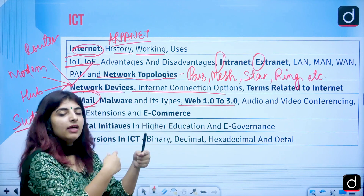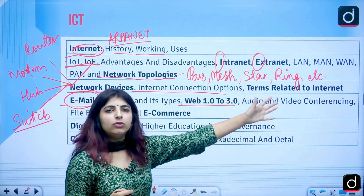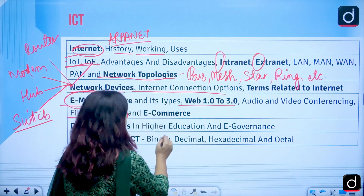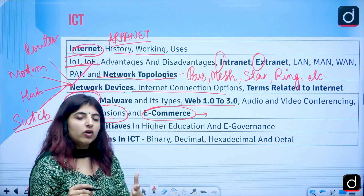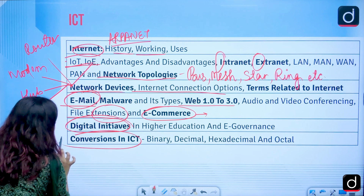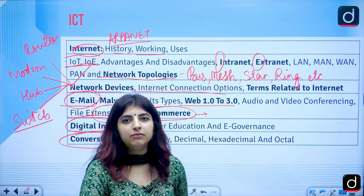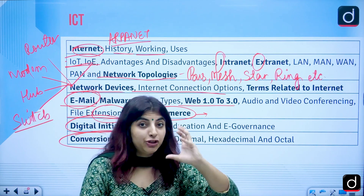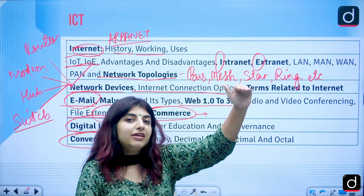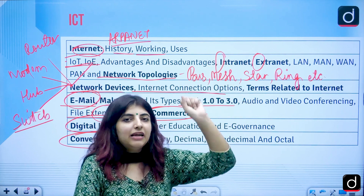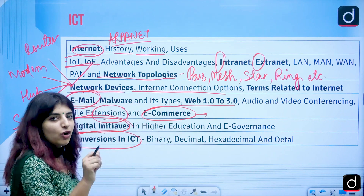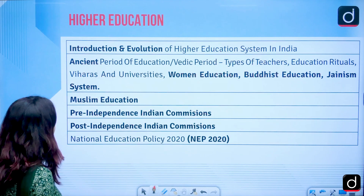Web 1.0 to 3.0 and how the web developed over the years, audio and video conferencing, file extensions for image, audio, video and documents, e-commerce and e-governance models (B2B, C2C, etc.), and digital initiatives in higher education will be covered. Number system conversions — binary to decimal, decimal to binary, octal, hexadecimal — will also be taught with tips and tricks so students can solve these questions quickly.